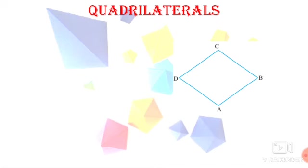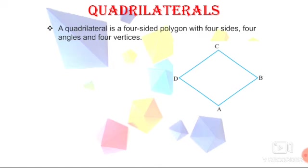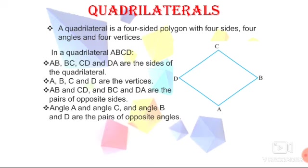Quadrilaterals means four laterals means sides. A polygon which is having four sides or four line segments, that closed curve or polygon is called a quadrilateral. It is having four sides, four angles and four vertices.